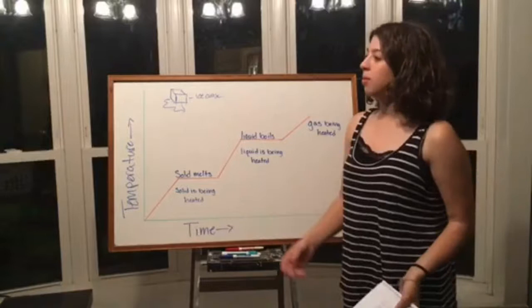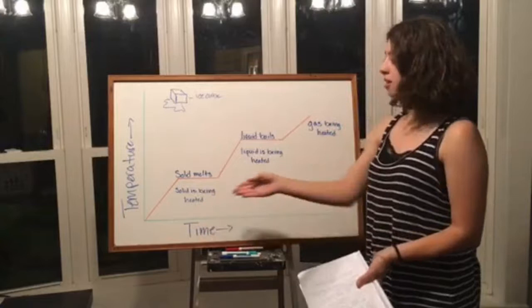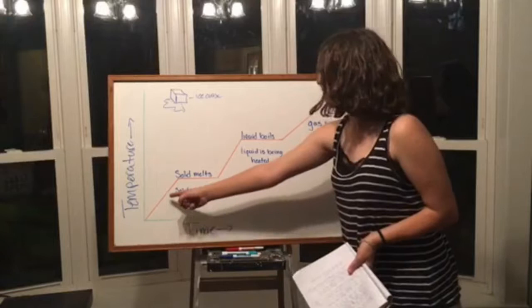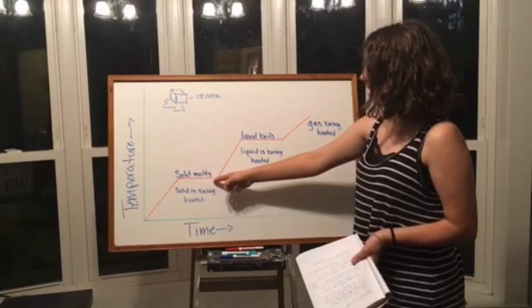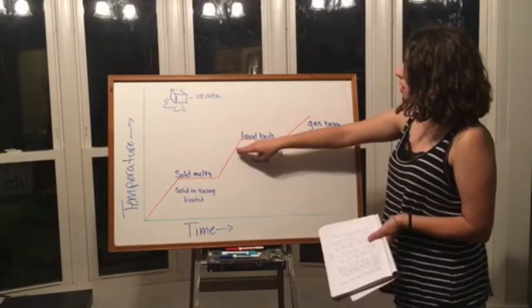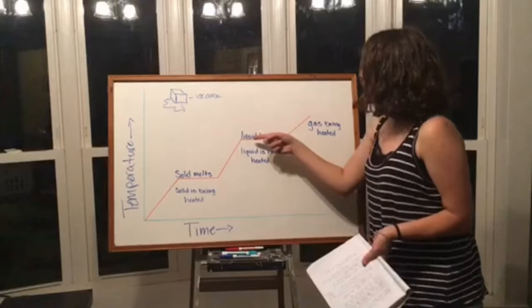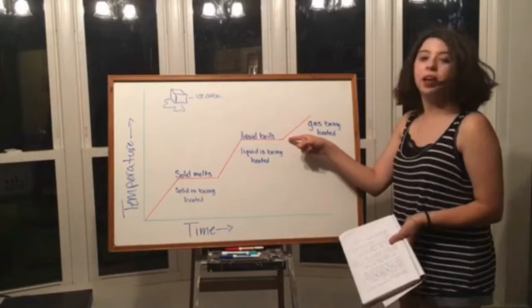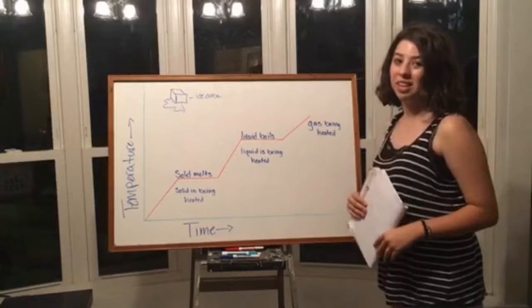This is an example of a heating curve graph using an ice cube. The solid starts being heated; once completely melted it maintains temperature for a bit, then begins to boil. Temperature keeps rising until fully boiling, holds again, and then as the liquid is heated further it slowly becomes a gas. That is an example of a heating curve graph.